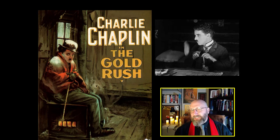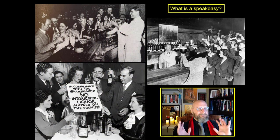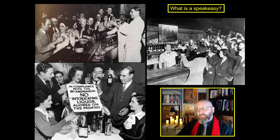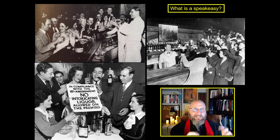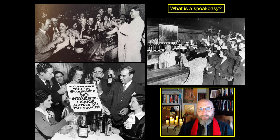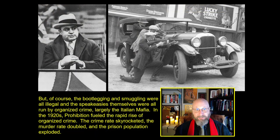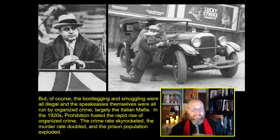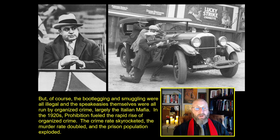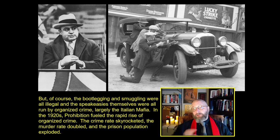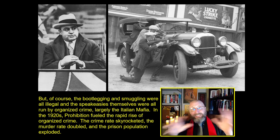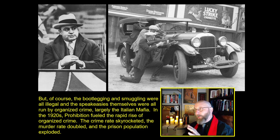This was still the era of Prohibition. Speakeasies were hidden bars — secret bars in cellars, underneath warehouses, or at the very tops of hotels — all run by gangsters. All the bootlegging, smuggling, and speakeasies were illegal, run by organized crime, largely the Italian Mafia. In the 1920s, Prohibition fueled the rapid rise of organized crime. The crime rate skyrocketed, the murder rate doubled, and the prison population exploded as criminal organizations engaged in larger and larger wars over control of the illegal alcohol trade.